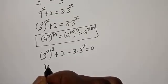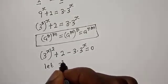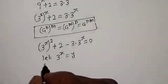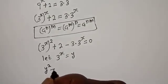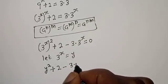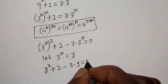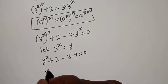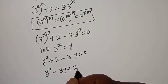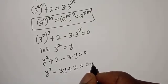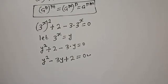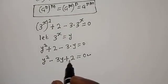Now let 3 raised to power s equal y. Substituting, we have y squared plus 2 minus 3y is equal to 0, which gives y squared minus 3y plus 2 is equal to 0. This is a quadratic equation which can be solved using the quadratic formula or factorization method.